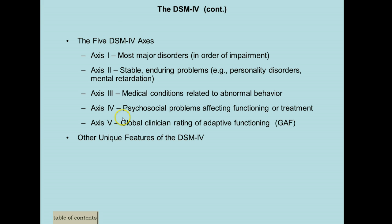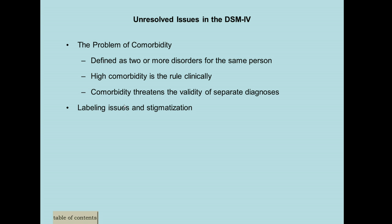If they don't have any medical problems, for example on Axis Three, you write 'none' — you want to write something on each axis. The DSM gives you criteria for each disorder, but it does not give you what causes a disorder, it does not talk about treatment, nor does it talk about theory. The DSM is atheoretical — it does not talk about cause or treatment.